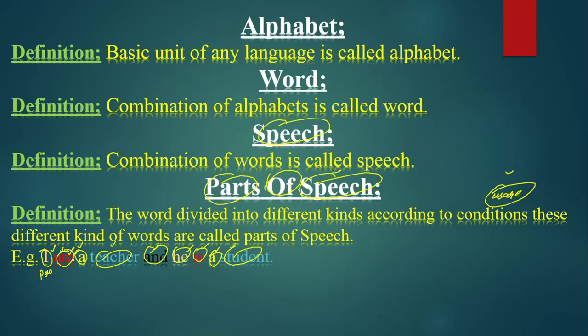Verb has the definition: a verb is a word which shows an action, state, condition, possession, presence, or absence of a person, place, or thing. Verb is not only the name of an action but also state, condition, possession, presence, or absence. In 'I am a teacher', 'am' is showing a state — the status that I am a teacher.